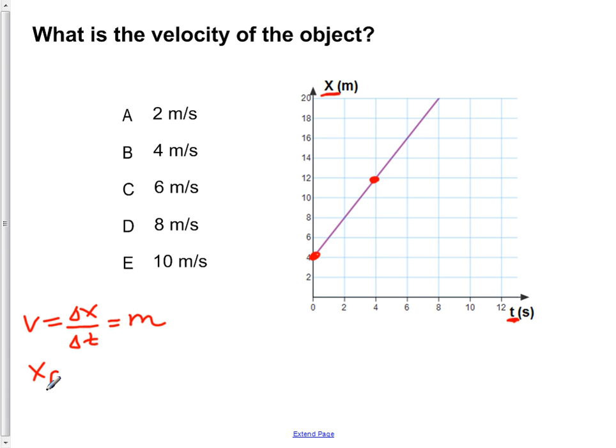Now we write down the values at those points. Our final position, xf, is 12 meters at a time of 4 seconds. Our initial position is 4 meters at a time of 0 seconds.